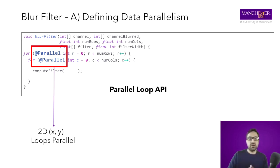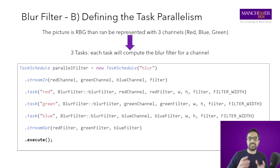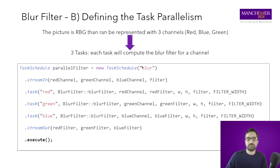After annotating the code to define data parallelization, the second thing is to define the tasks. Because it's a picture, we can split the task into three channels — RGB: red, green, blue. We compute each channel in parallel by creating three tasks. We have a task schedule object — we give it a name, in this case 'blur' or 'blurFilter'. Then we define which data to copy in, using stream-in and stream-out, because GPUs, CPUs, and FPGAs typically don't share memory and we need to specify which regions to copy.